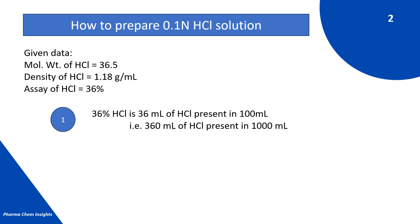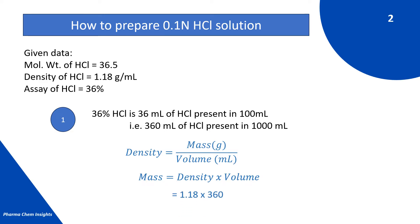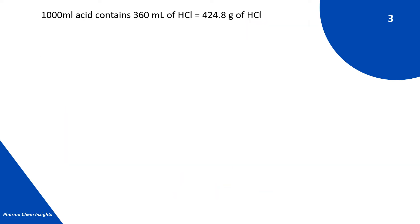36% HCl means 36 ml of HCl is present in 100 ml, that is 360 ml of HCl present in 1000 ml. We have to convert this ml into grams. For this, we use the formula: density = mass / volume, so mass = density × volume = 1.18 × 360 = 424.8 g. That is, 1000 ml of acid contains 360 ml of HCl, which equals 424.8 g of HCl.